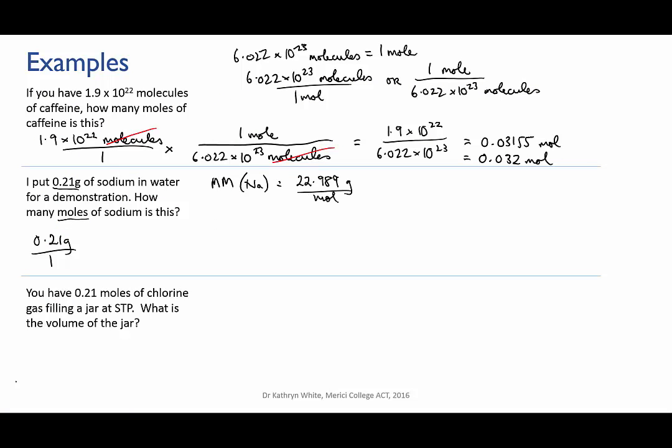Now in this problem I want to cancel out the grams and turn it into moles. So I'm going to have to turn my molar mass conversion factor upside down so that the grams is on the bottom and the moles is on the top like this. The grams now cancel out and I'm left with moles.